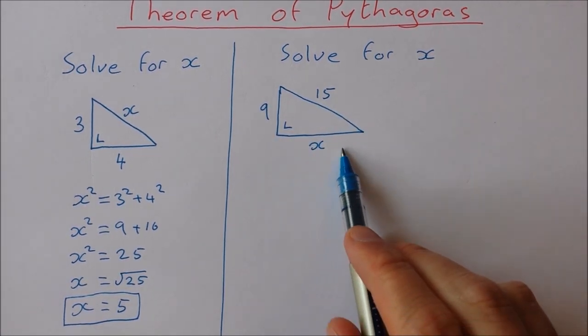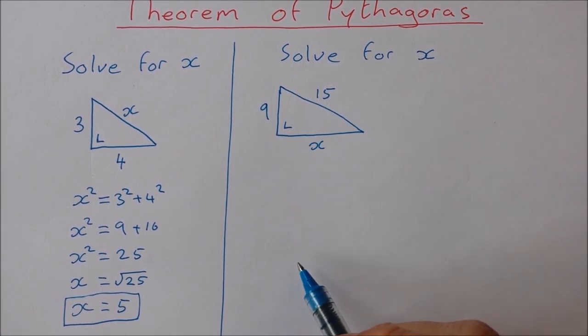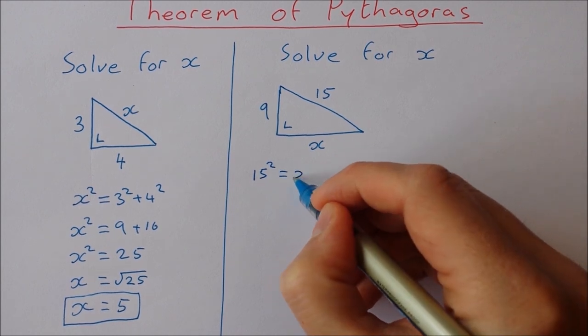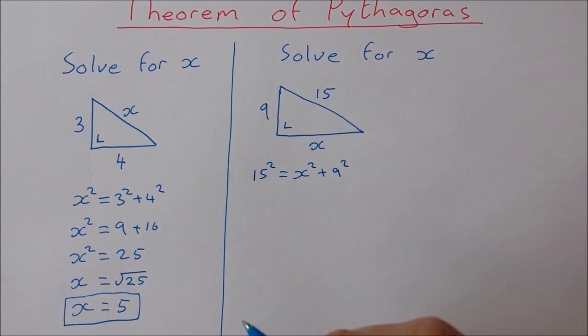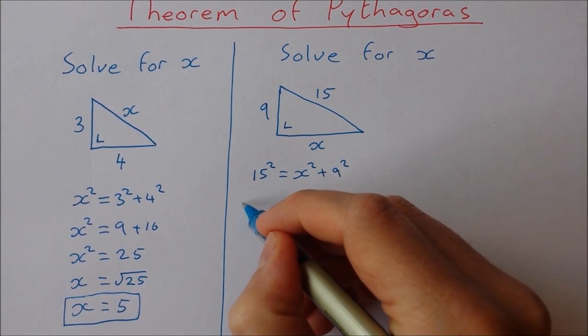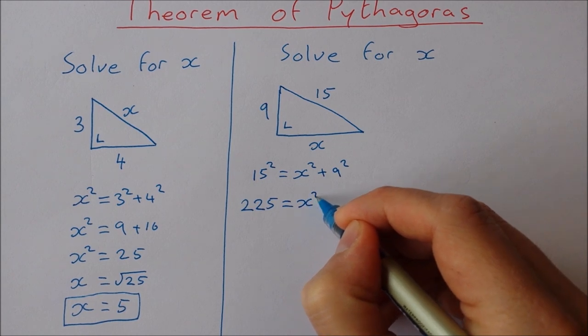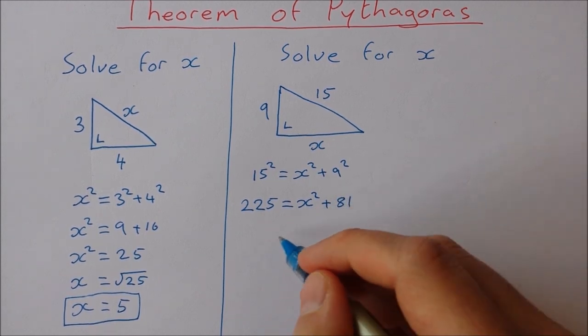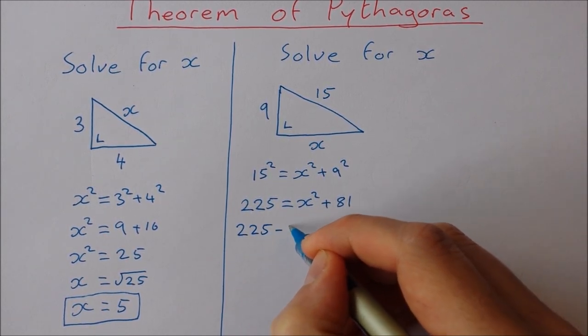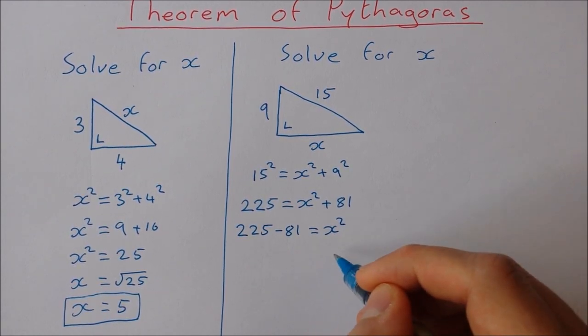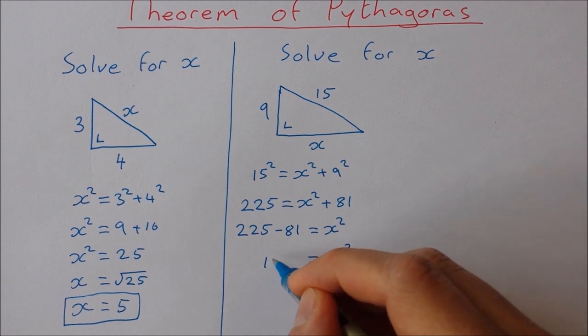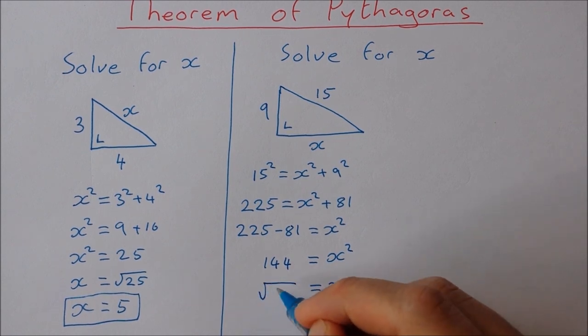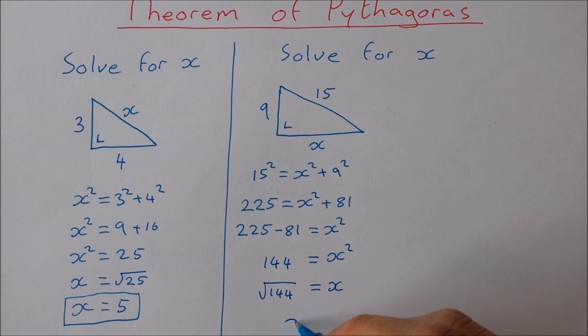Next one here solve for x. This time the unknown side is not the hypotenuse. So I'm going to write it out the same way. I'm going to start with the hypotenuse squared. So 15 squared is equal to x squared plus 9 squared. I'll square everything out. 15 squared is 225. That's equal to x squared plus 9 squared is 81. Take 81 from both sides. So 225 minus 81 is equal to x squared. Okay, so I get x is equal to the square root of 144. So x is equal to 12.